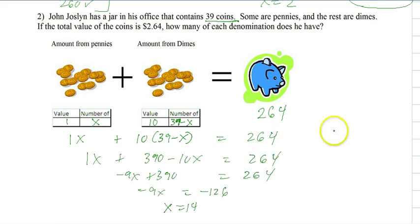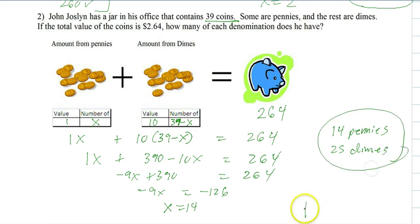So x represents the number of pennies. So we have 14 pennies. And then 39 minus 14 is 25 dimes. Circle it and check it. And there we have it.